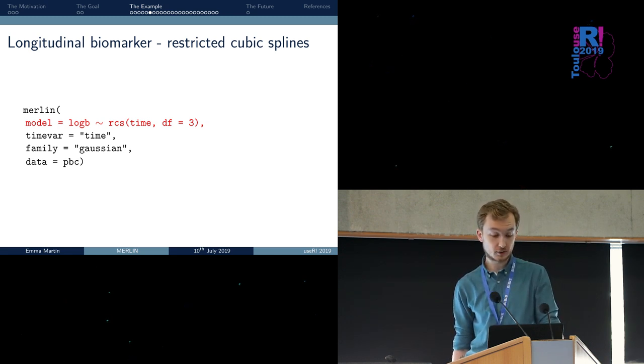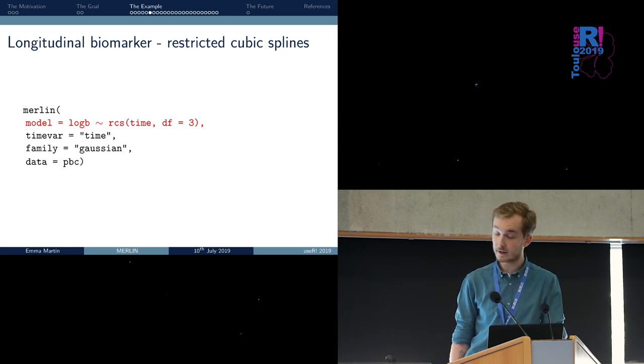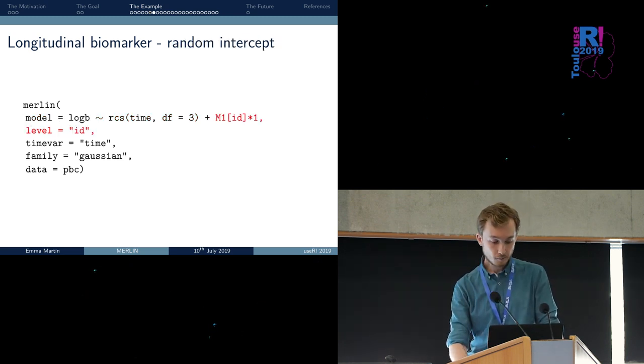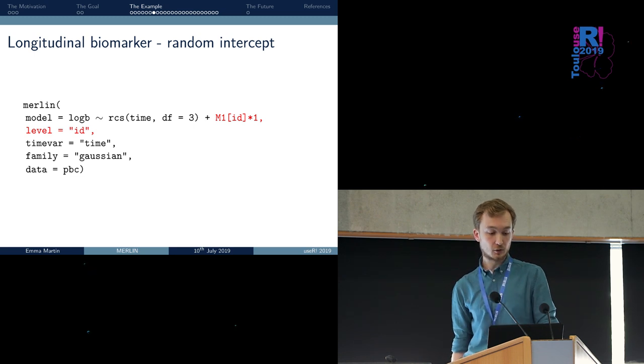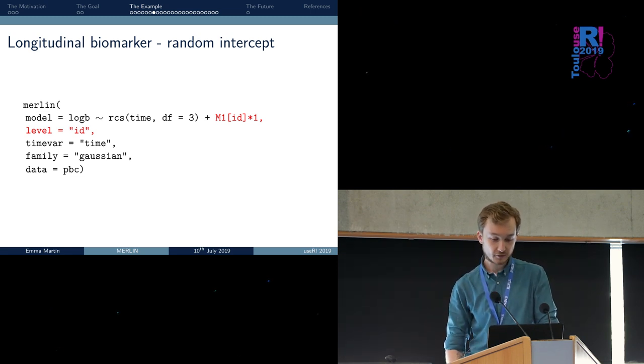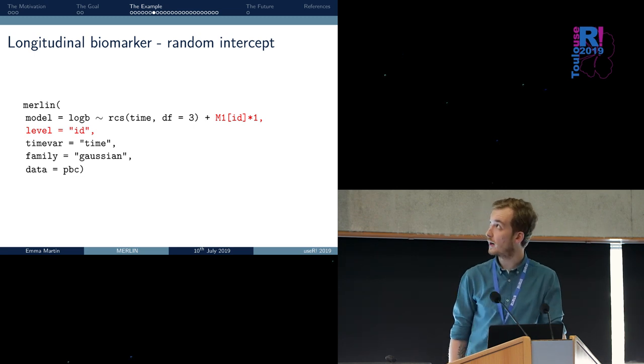We can extend this model by using a flexible formulation of time. For instance, we can use restricted cubic splines using three degrees of freedom. All we have to do is to use the RCS function on the right-hand side of the formula.